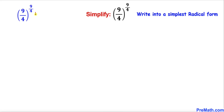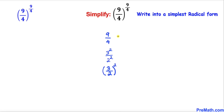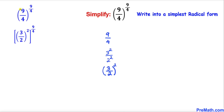Here's our problem and we are going to simplify it. Let's focus on the base 9/4. This 9/4 could be written as (3/2) whole square. Therefore, 9/4 has been replaced by (3/2)².